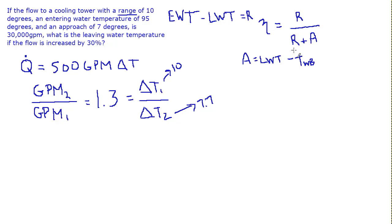And approach is leaving water temperature minus the wet bulb temperature outside. So when you put that all together, what is range plus approach? It's entering water temperature minus leaving water temperature, plus leaving water temperature minus wet bulb. So the leaving water temperature cancels out. You end up with just entering water temperature minus wet bulb temperature.